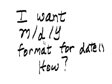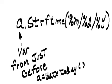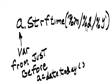I want month, day, year format for the date. How? Use the variable from just before: a = date.today(). Then a.strftime('%m/%d/%y').